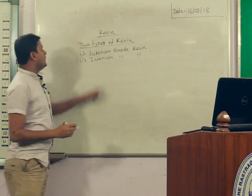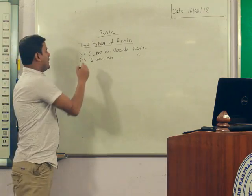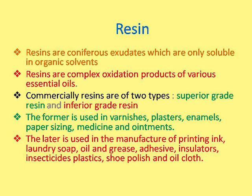Two types of resin are obtained from gymnosperms: one is superior grade resin and another is inferior grade resin. These resins are used in varnishes, plaster, enamels, and in paper sizing.